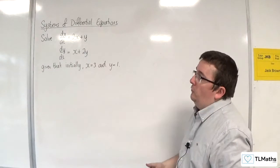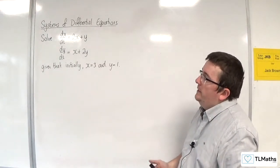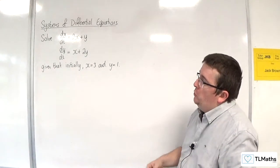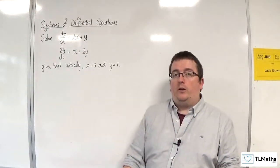In this video, I'm going to solve dx by dt equals 2x plus y, dy by dt equals x plus 2y, given that initially x equals 3 and y equals 1.